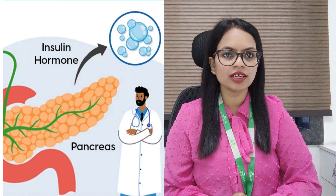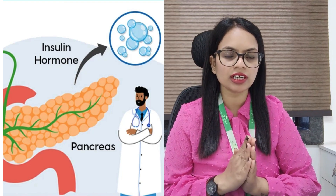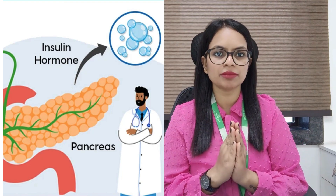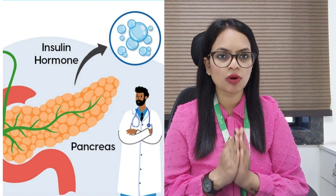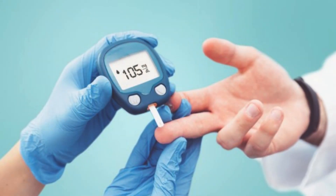Next is the pancreas. The pancreas works to secrete insulin, and insulin also helps control our metabolism. It maintains glucose levels in the blood. If you have more glucose in your diet or your insulin levels are imbalanced, there are chances of diabetes.